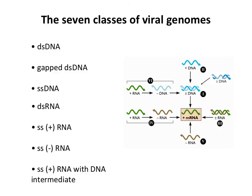So we have double-stranded RNA genomes, and we have single-stranded RNA genomes. But we have single-stranded RNA genomes of three types: plus-stranded, minus-stranded, and then plus-stranded RNA genomes that go through a DNA intermediate. These are very special viruses that we'll deal with separately. Those are the seven classes.